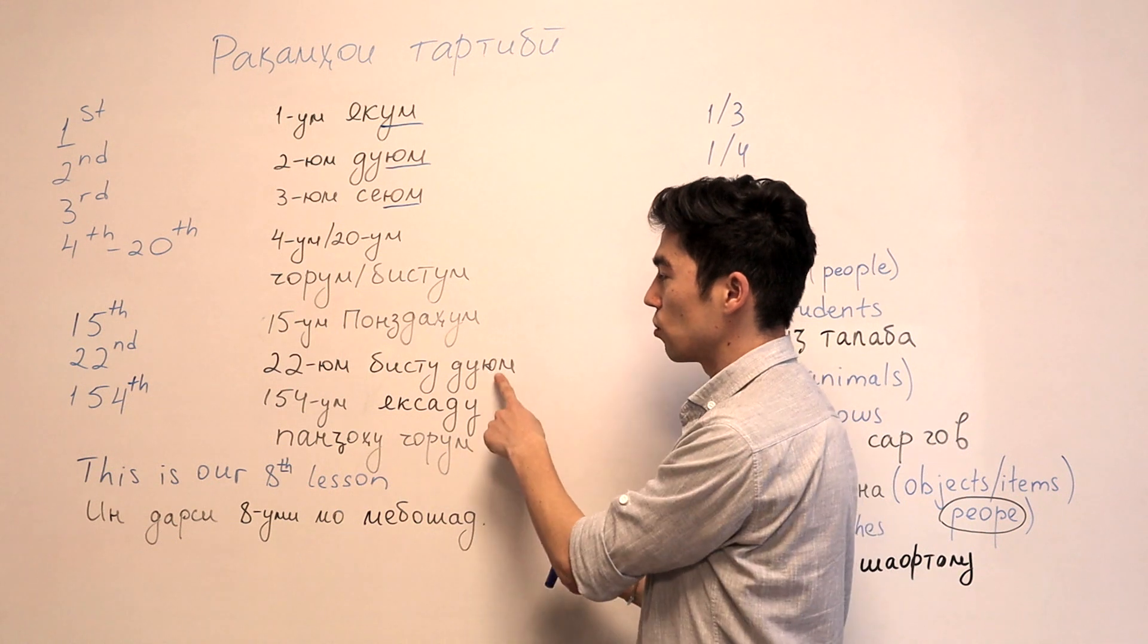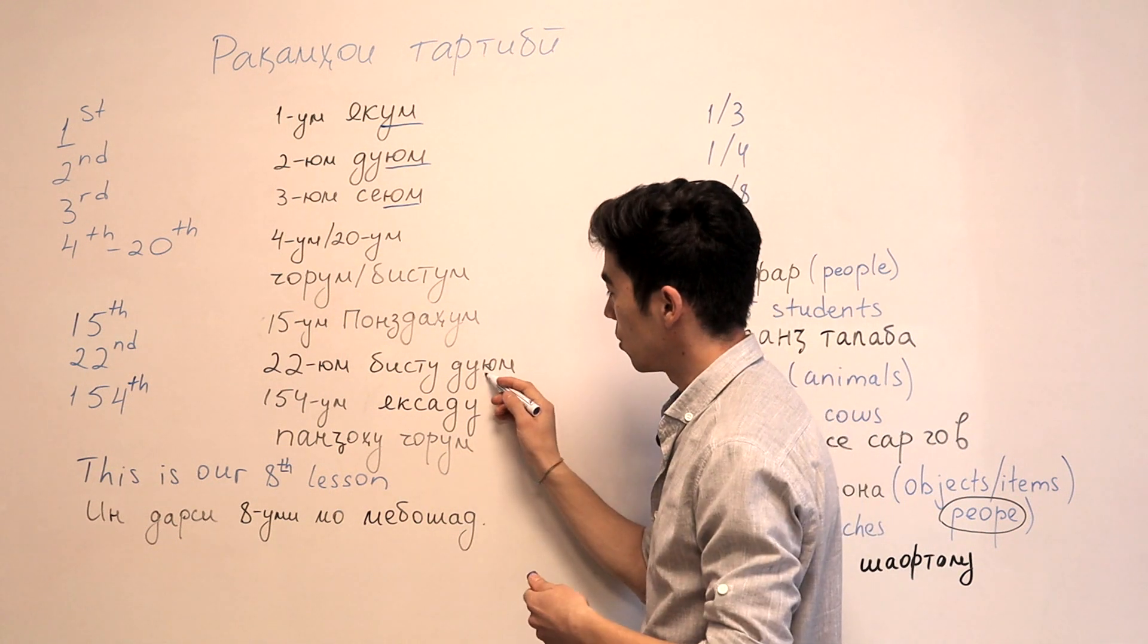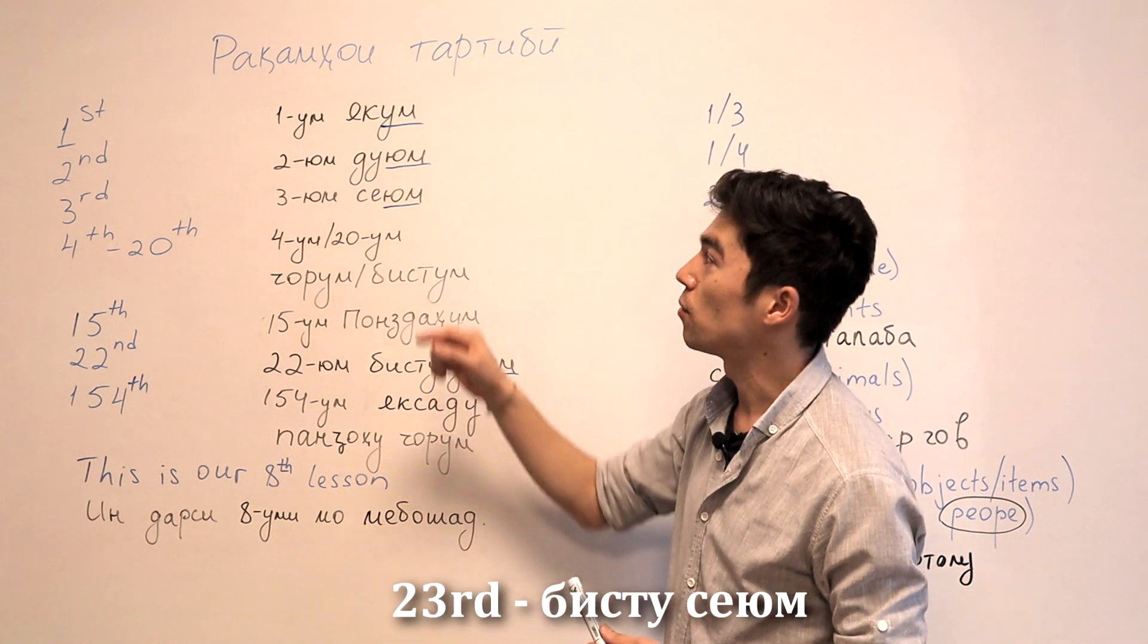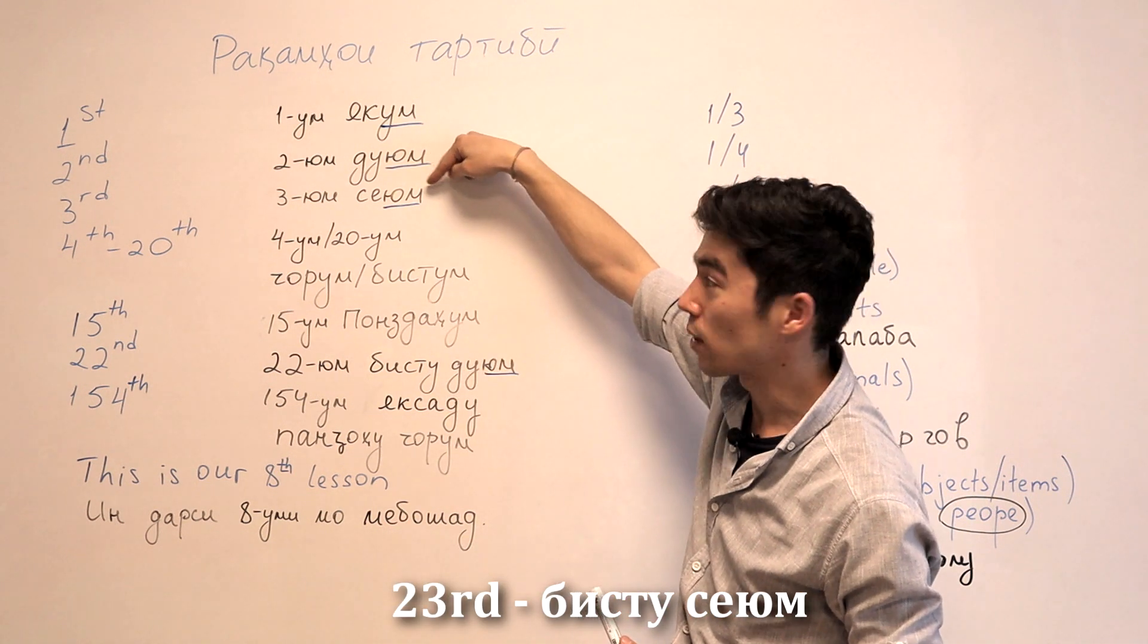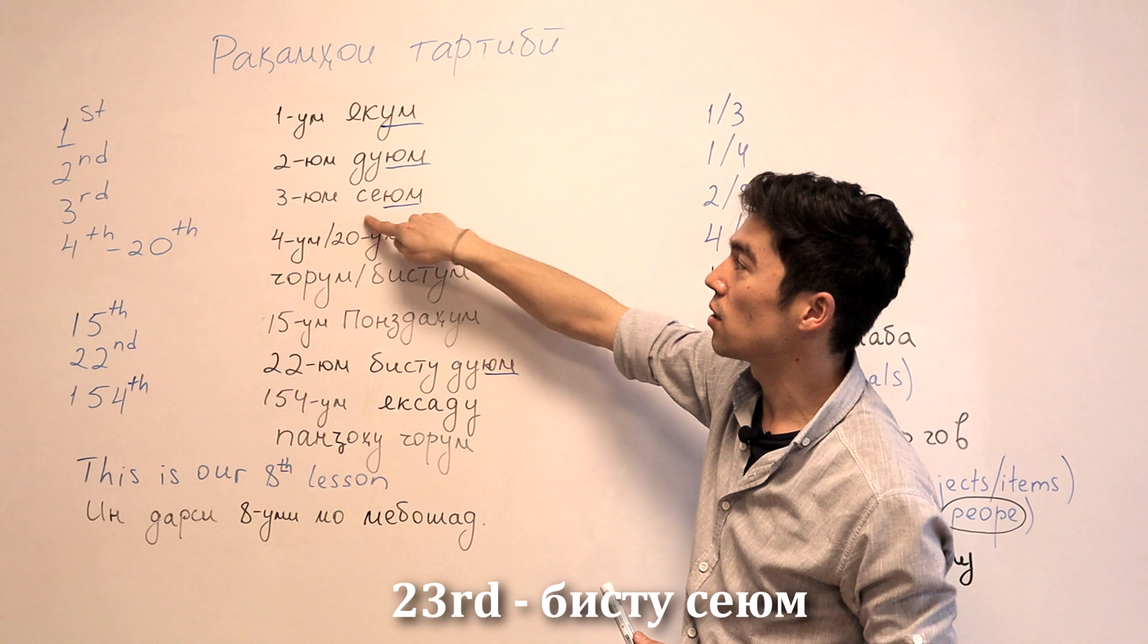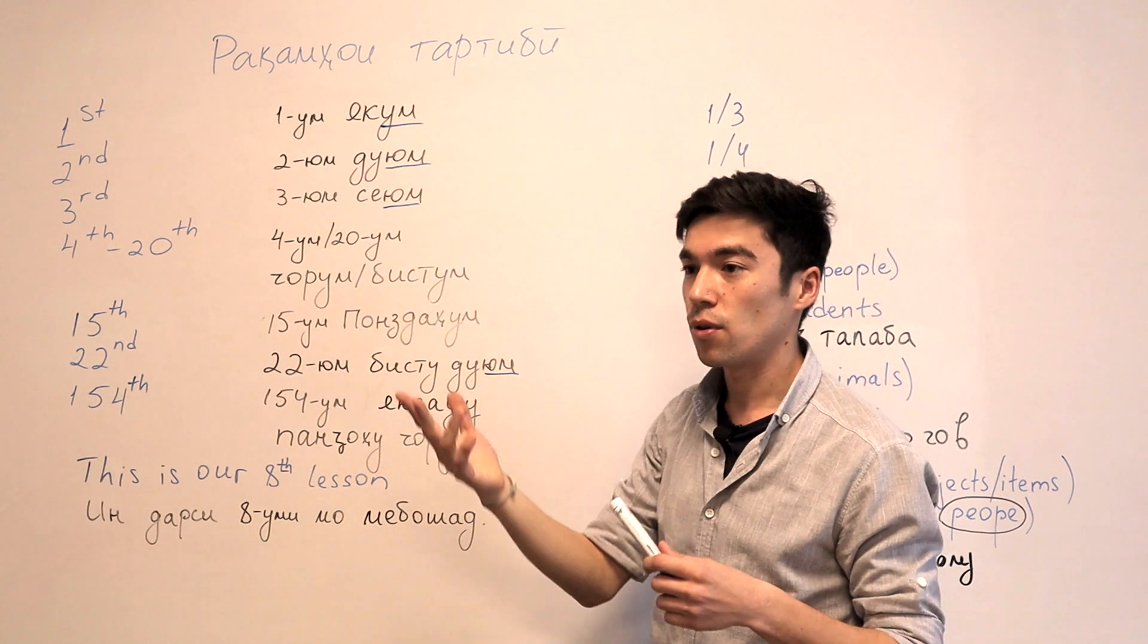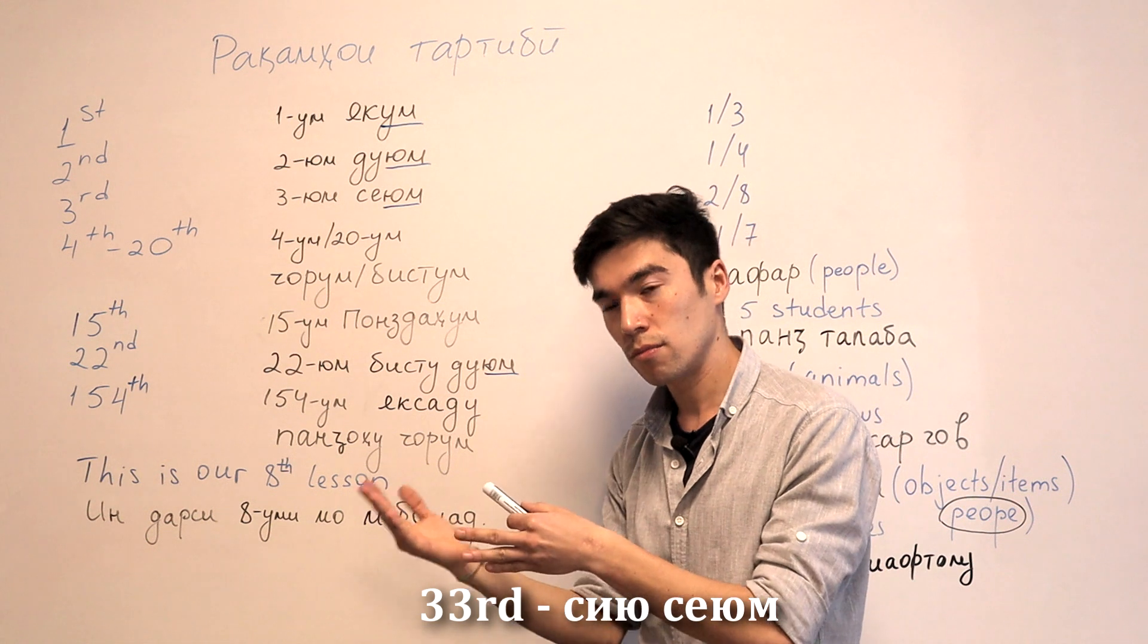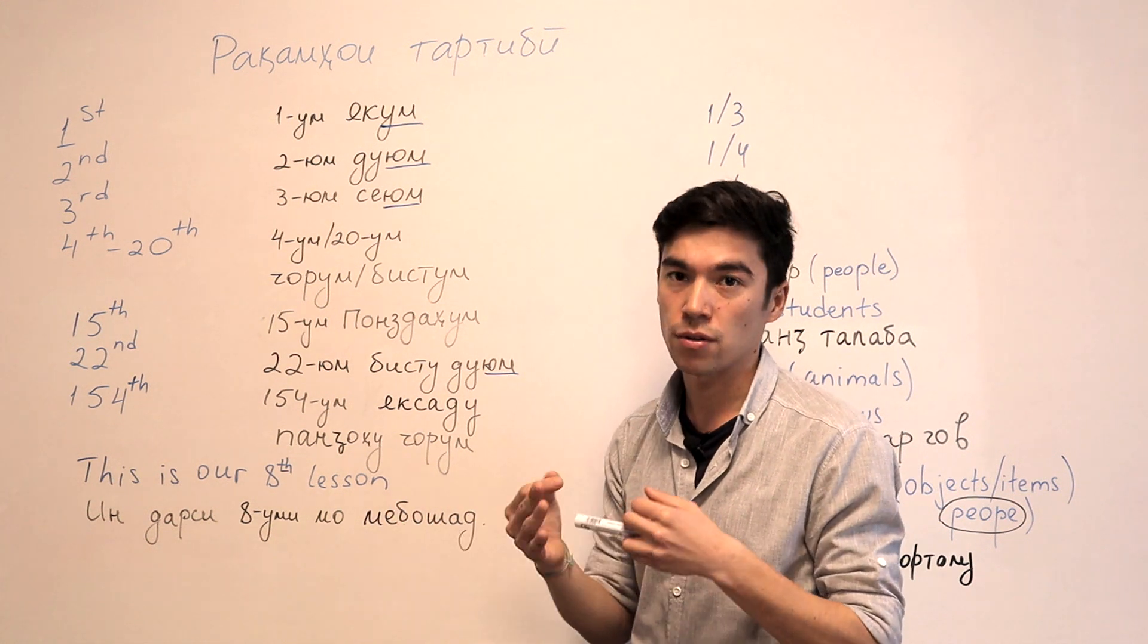22nd will be BISTU DUYUM. YUM. 23rd will be BISTU SEYUM. And the same for 33rd, for example, SIYU SEYUM. 53rd PONZDAHUM.